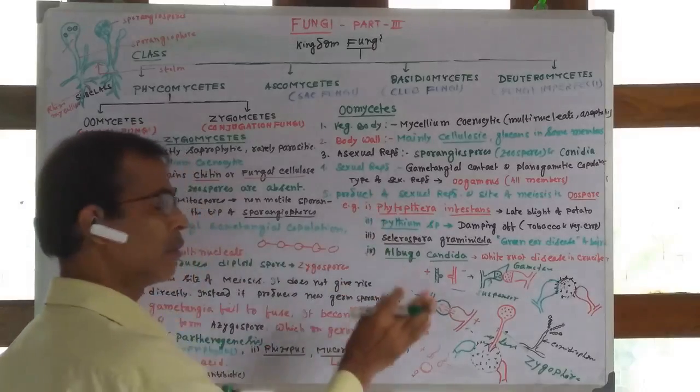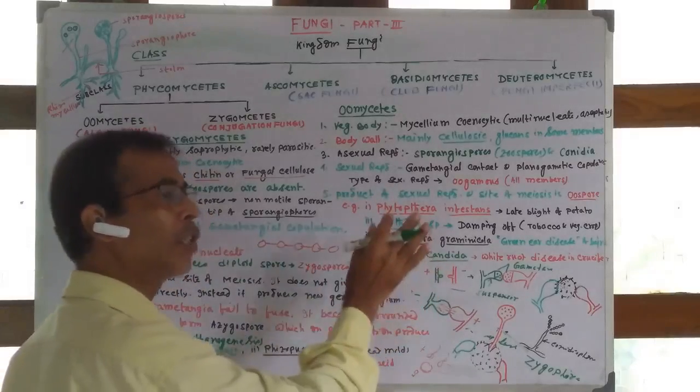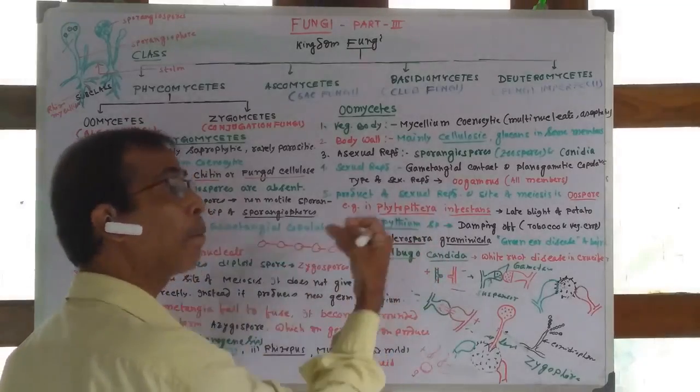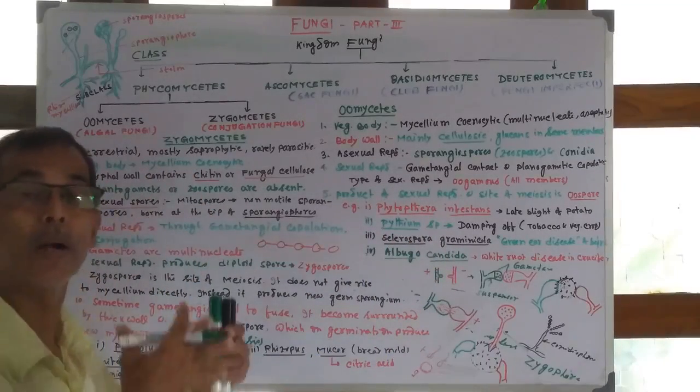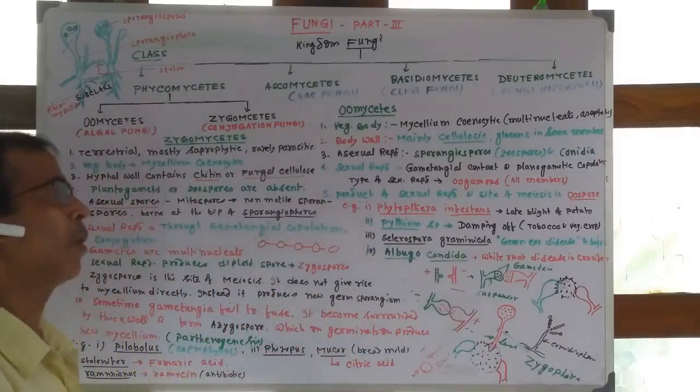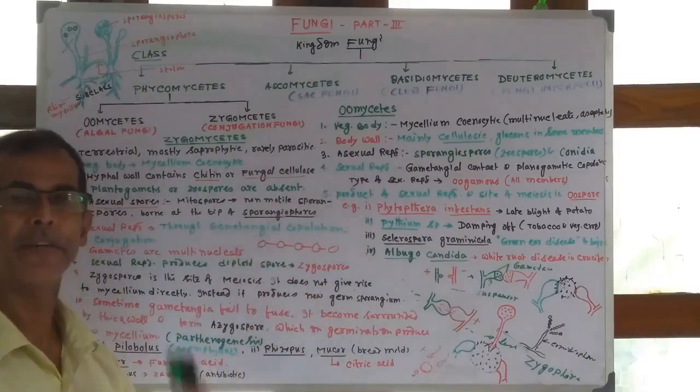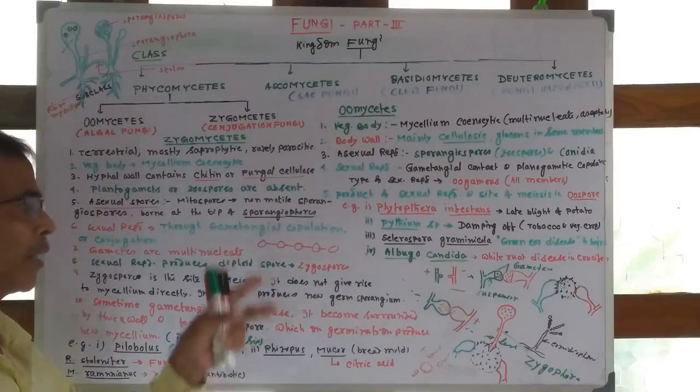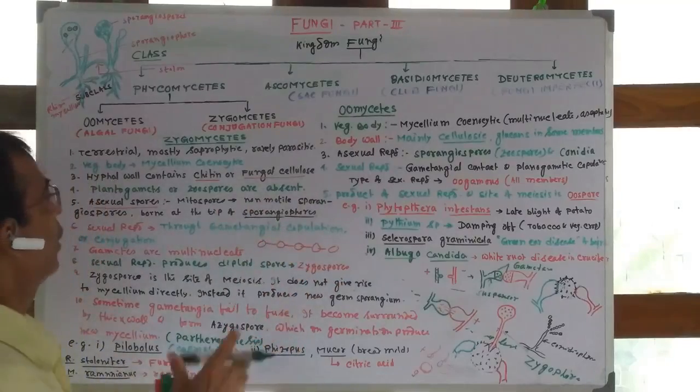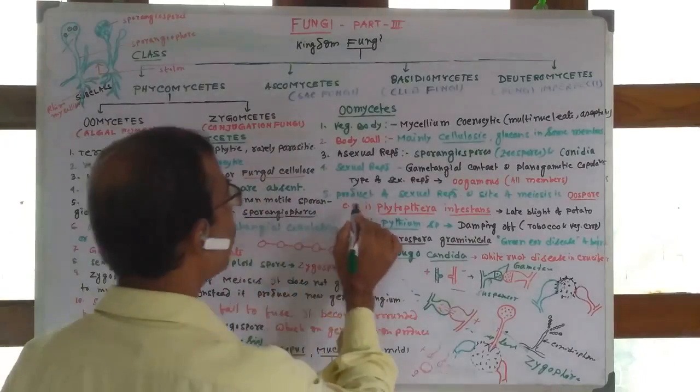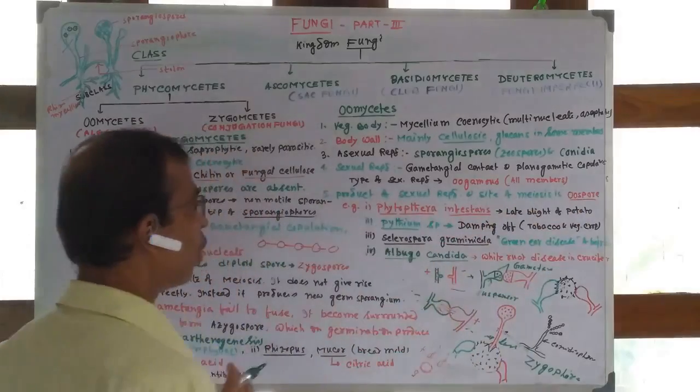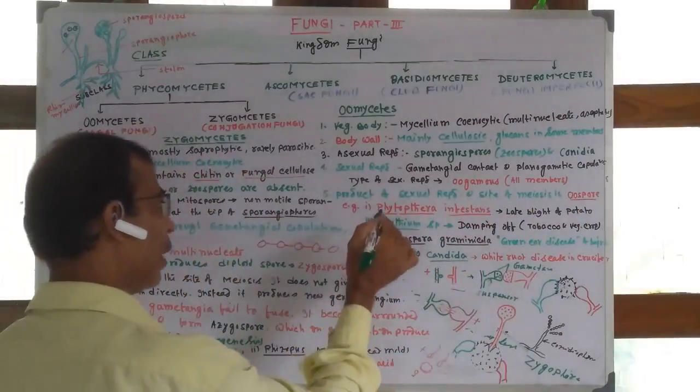The product of sexual reproduction and site of meiosis is the oospore. Meiosis occurs in the oospore, showing zygotic meiosis and a haplontic type of life cycle.